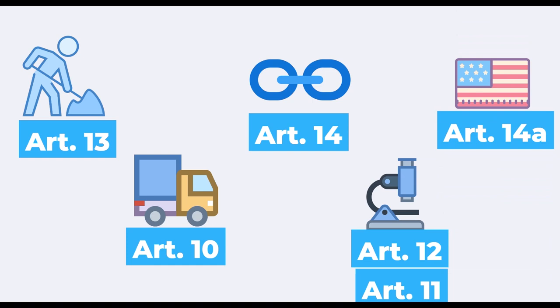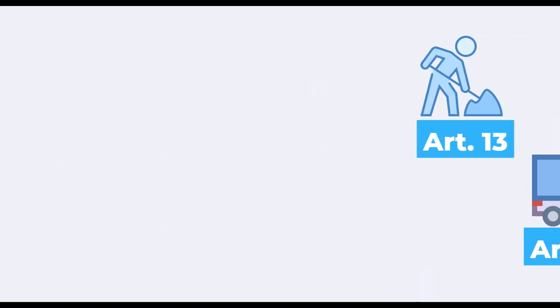In case a call explicitly allows it, the project may entail financial support to third parties. However, this so-called cascade financing is not treated in this chapter. Let's take a detailed look at the different types of third parties.